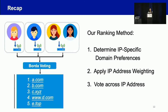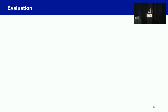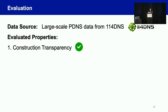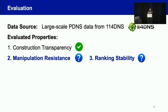We have to evaluate this in practice to see how well it works. We use the data source from 114 DNS from China, which is the largest DNS service provider in Asia. Using their large-scale passive DNS as input, we build a top list using our ranking method for evaluation. As we have openly described our ranking method and data set, we argue we already have construction transparency. In this talk, I will mainly focus on the remaining two properties: manipulation resistance and ranking stability.